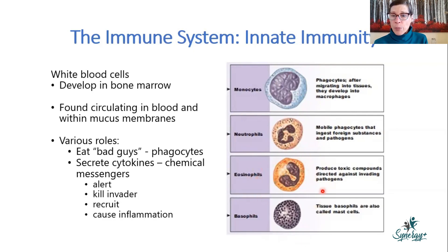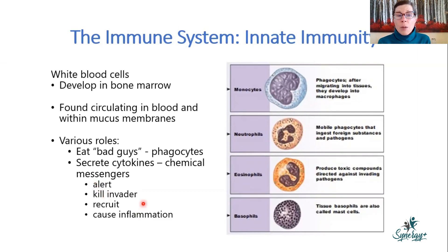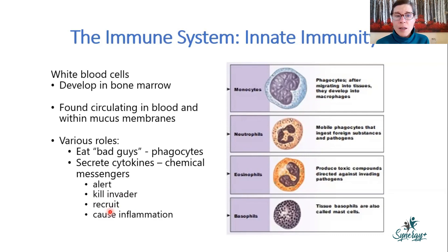Eosinophils and basophils secrete certain types of chemicals, and all of these cells secrete chemical messengers called cytokines. These messengers trigger an alert to surrounding cells — 'be careful, there's a pathogen on the loose.' They can actually kill the invader, recruit more white blood cells into the area, and cause inflammation. Inflammation is part of your innate immune response.